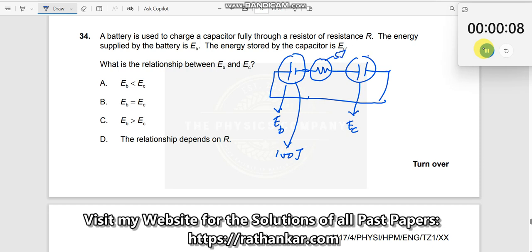That is, 5 joules goes over here, 95 joules can only be stored over here. So what does it mean? E-B should be greater than E-C. Answer C is the right answer.